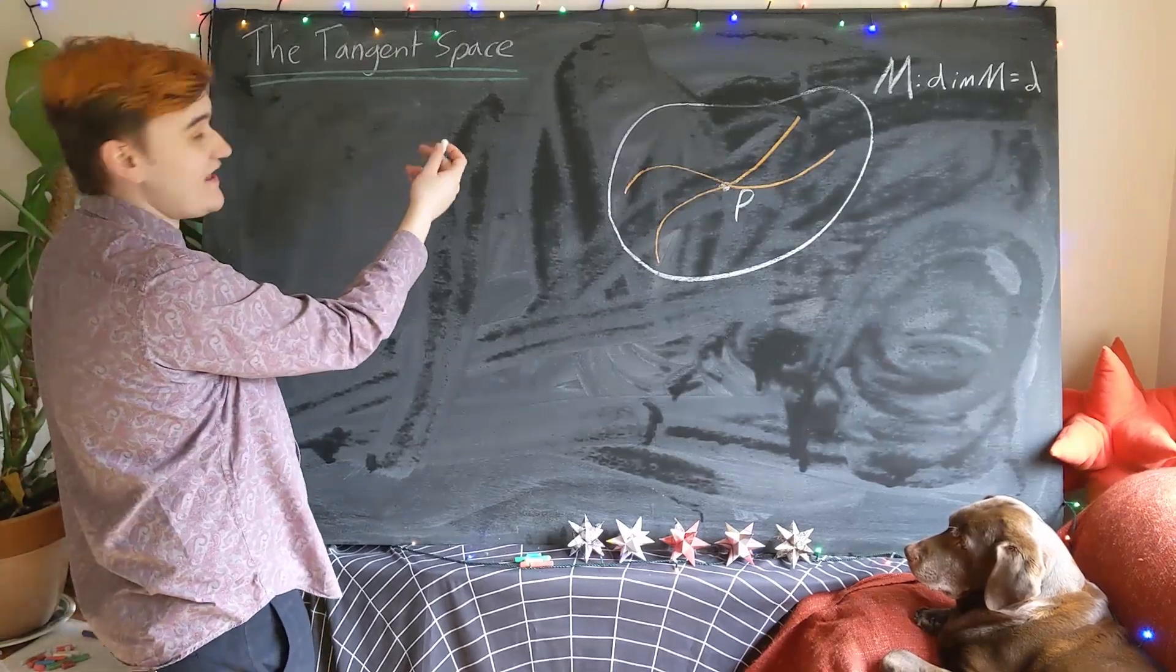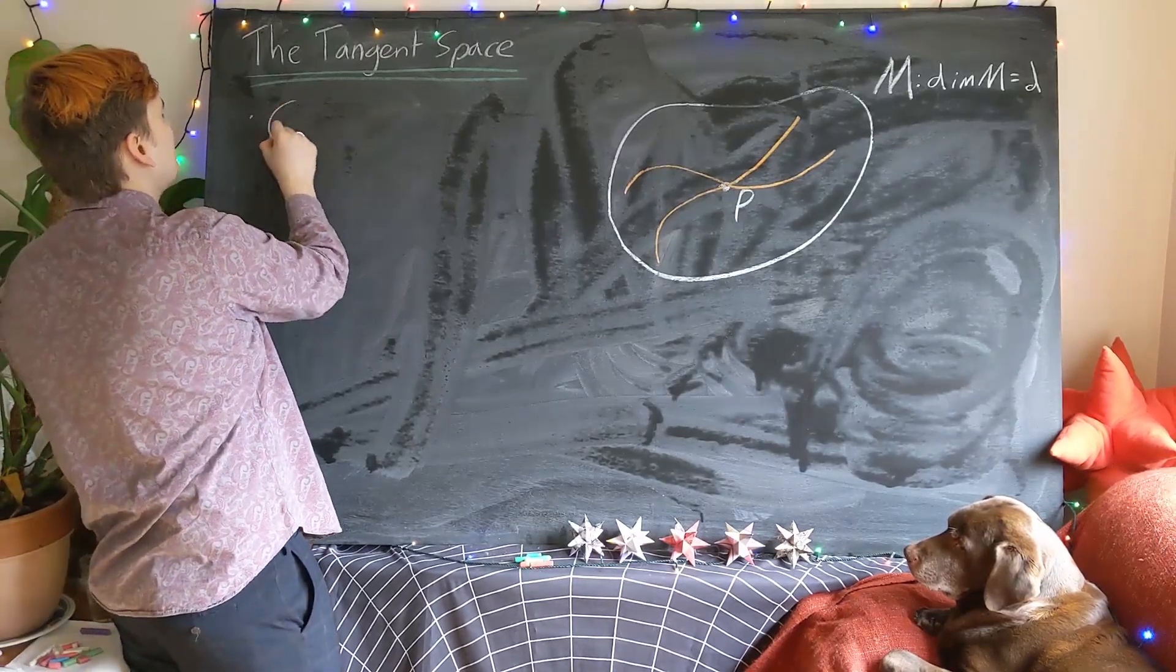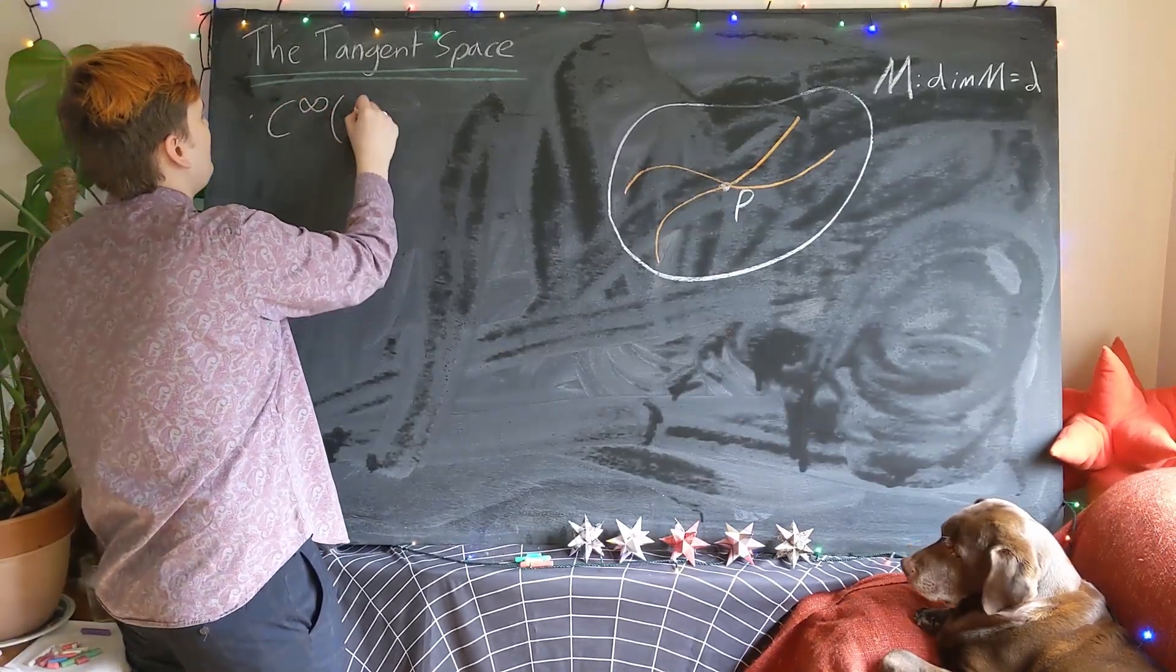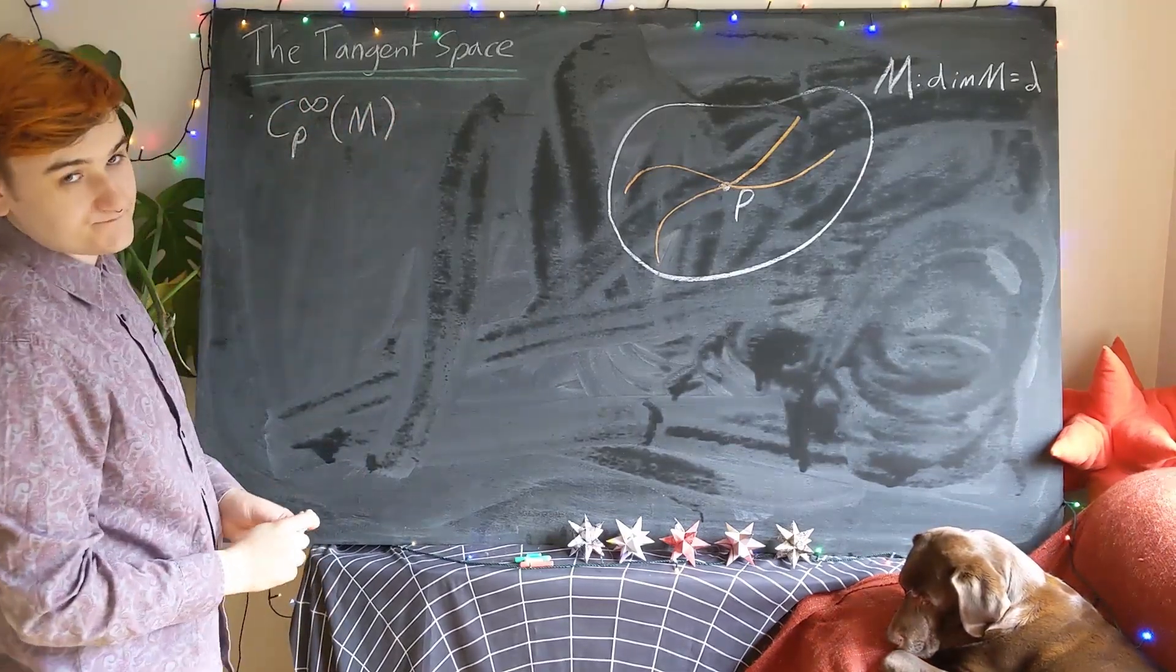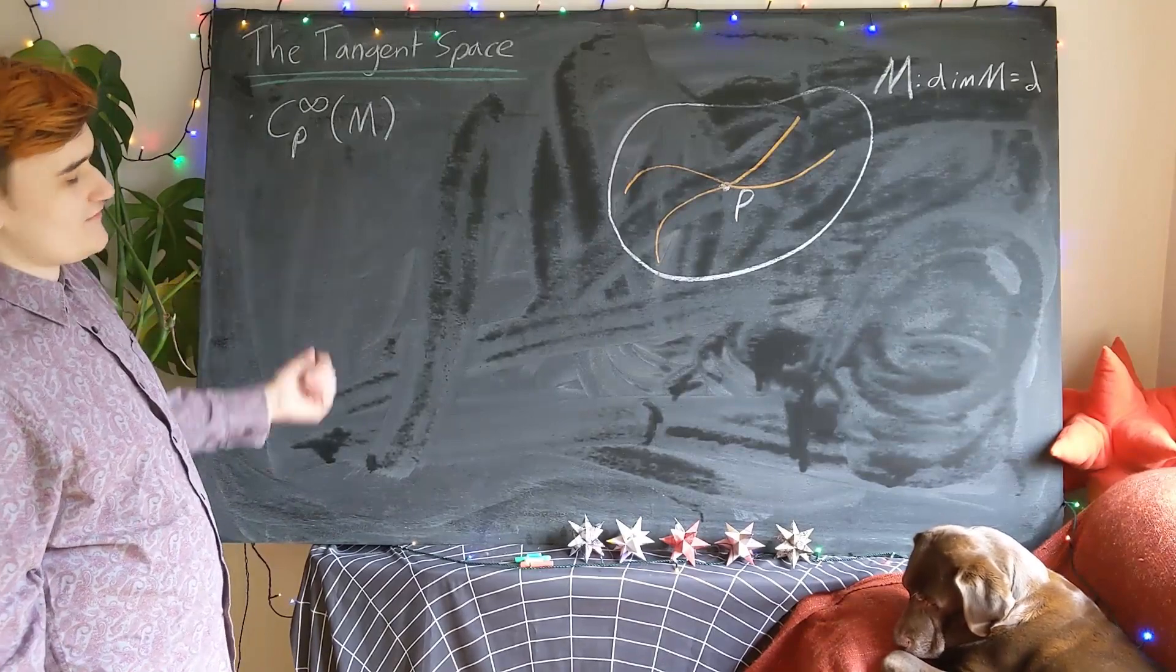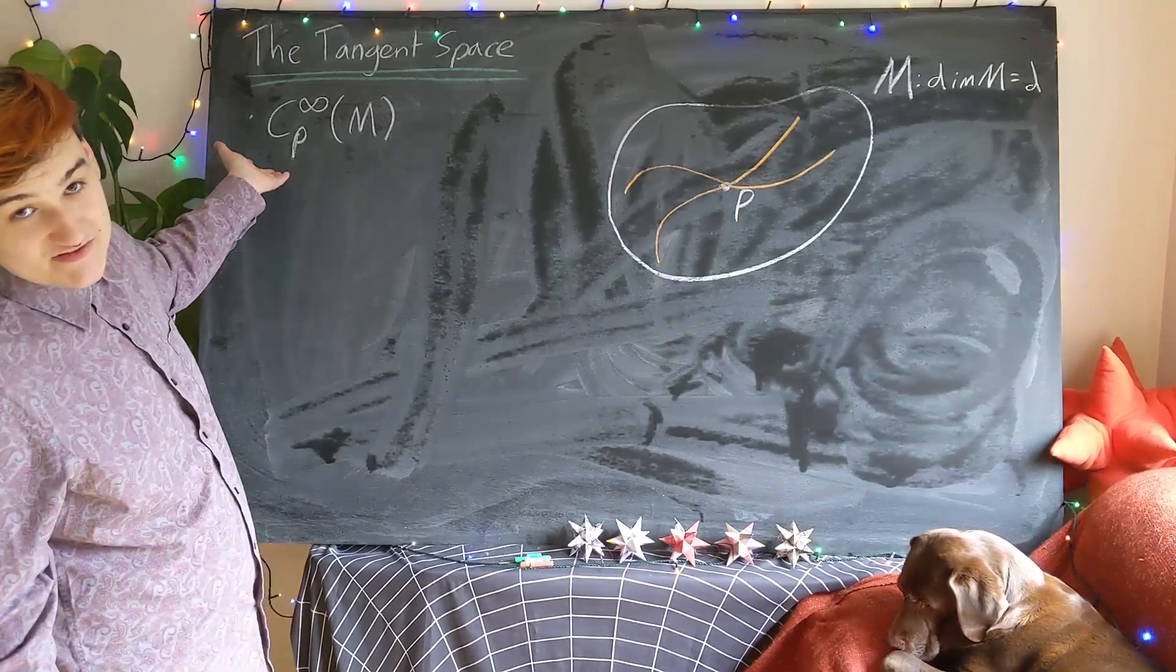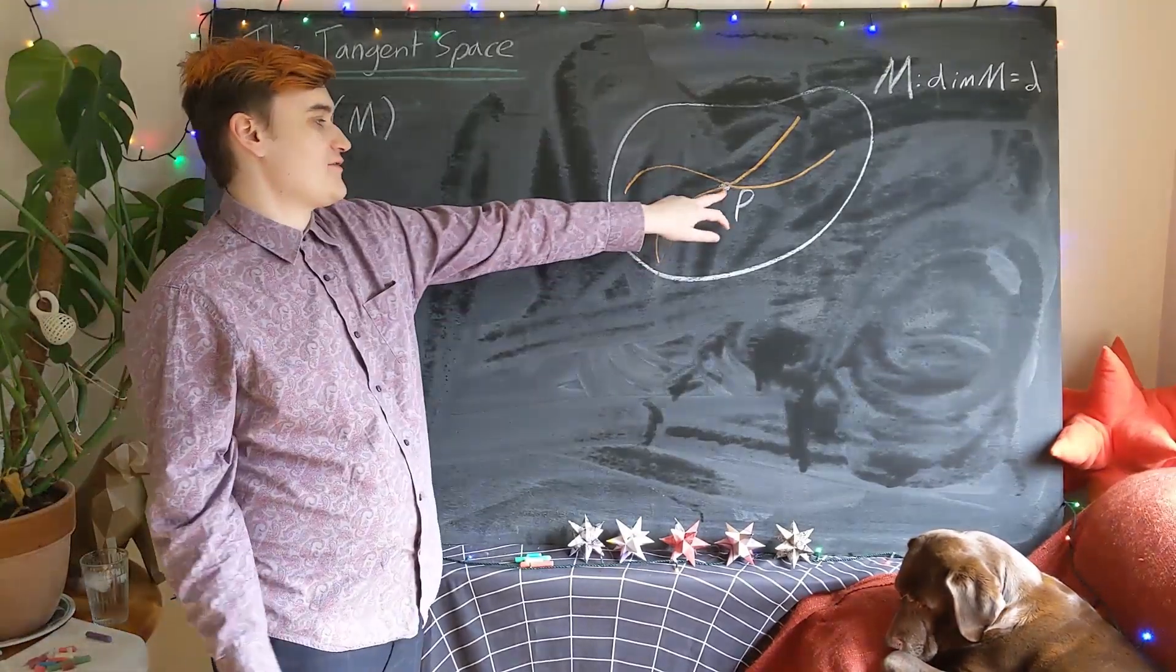And I'm going to give this a name now, I'm going to call it C infinity of the manifold at the point P. So this is just shorthand for me saying the set of all smooth curves passing through point P.